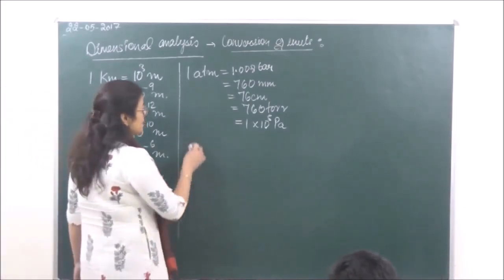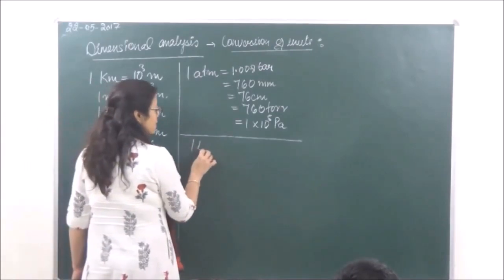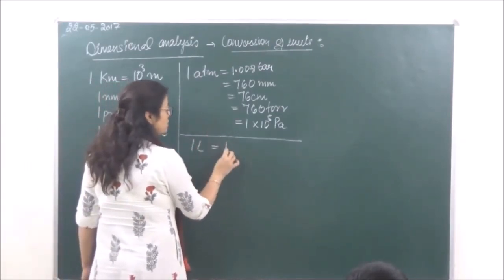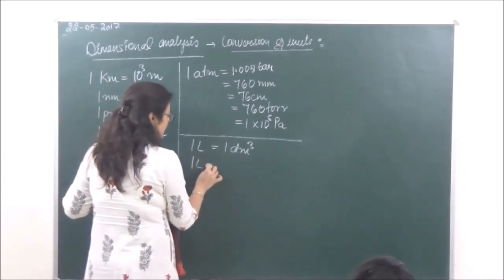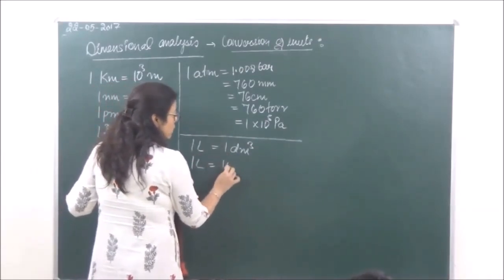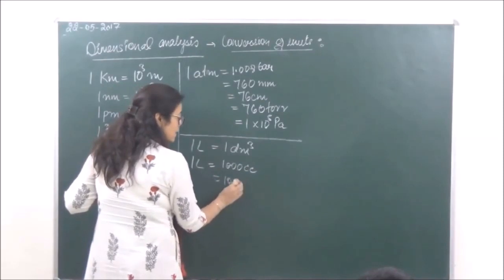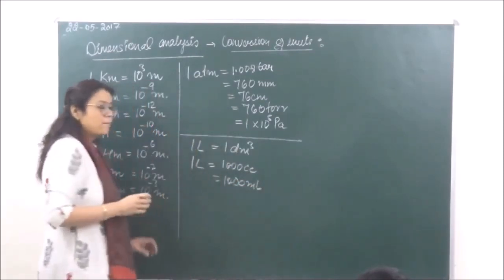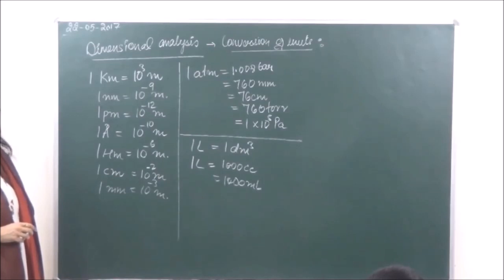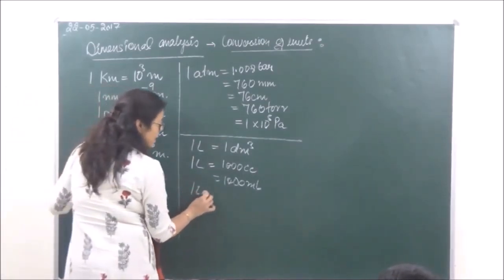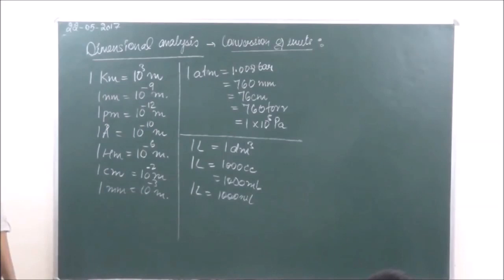Then for volume: one liter that is equal to 1.001 meter cube. And one liter that is equal to 1000 cc. Since 1 cc is equal to 1 ml, one liter will also be equal to 1000 ml.